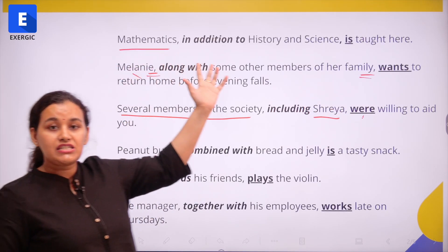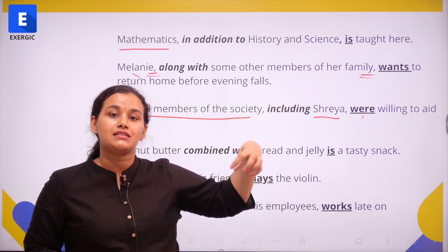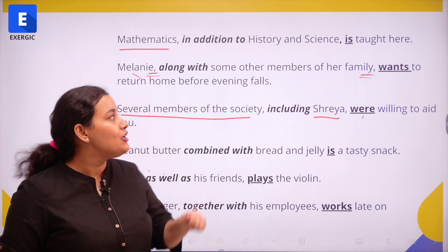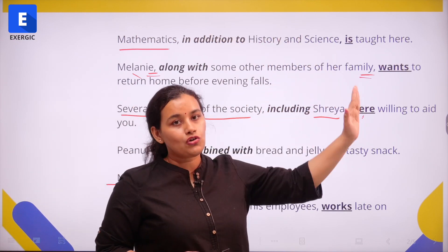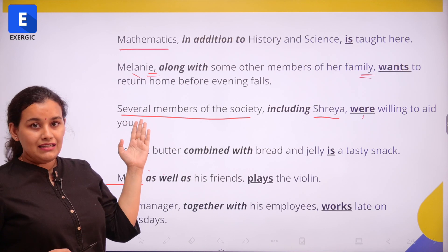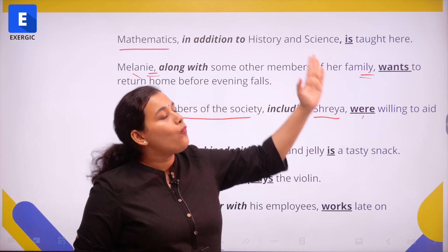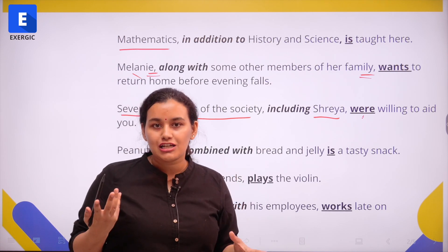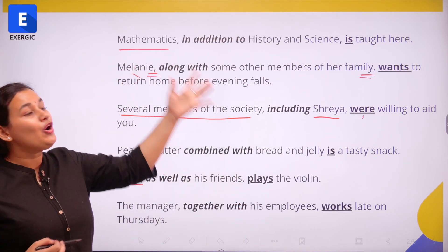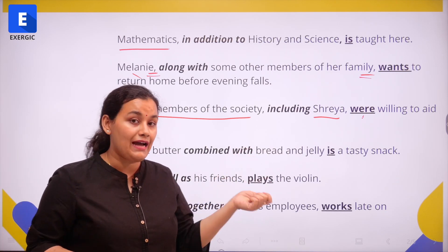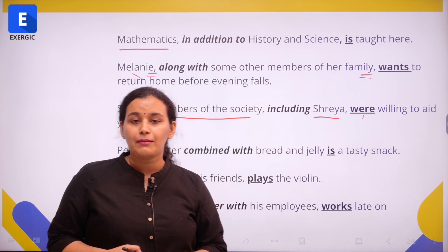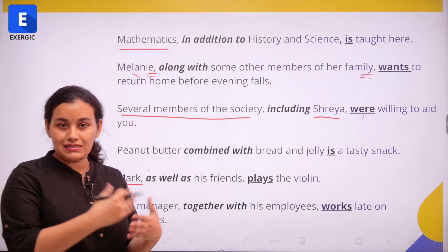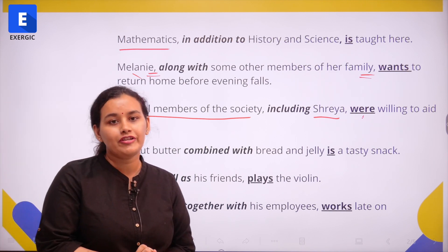Let us replace the connective phrases in our examples with the word "and." If I say mathematics, history and science — I'm referring to three separate subjects — my verb becomes plural: Mathematics, history and science are taught here. Similarly, Melanie and some of the other members of her family want to return home before evening falls. So if you say "along with" it takes a singular verb, but if you replace it with "and" the subject becomes plural and so does the verb.